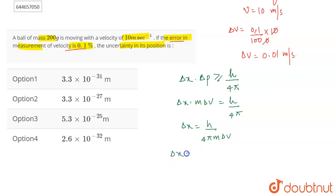6.626 into 10 to the power minus 34, right. This will be 4 into 3.14. The mass is 200 grams. The uncertainty in velocity is 0.01.